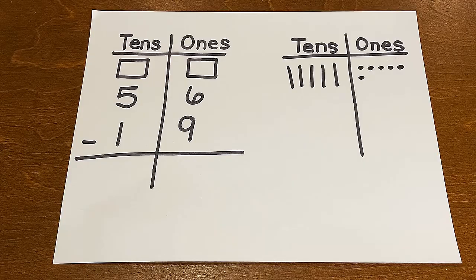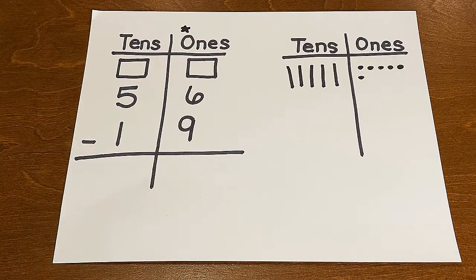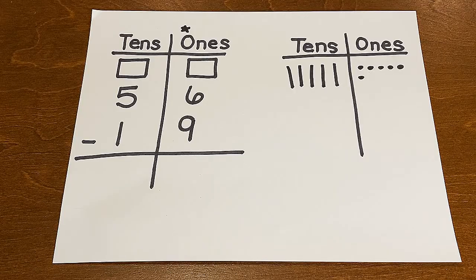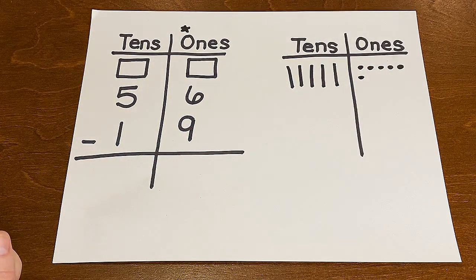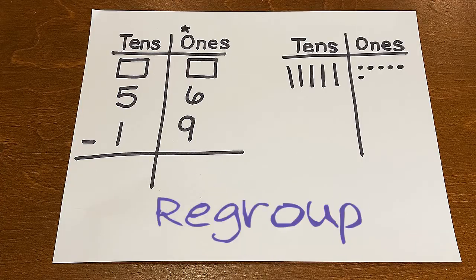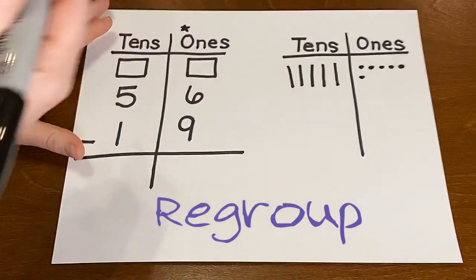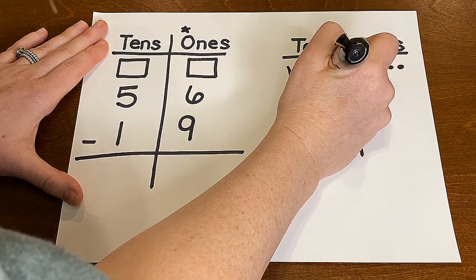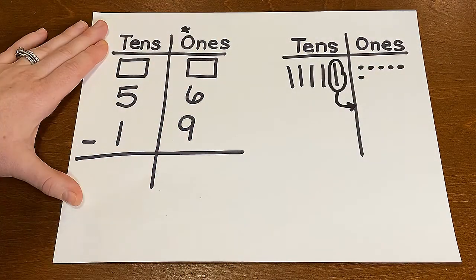I always start in the ones place and I like to put a star or even highlight the ones place to show that's where I'm going to start my problem. So now I need to ask myself are there enough ones to subtract nine? Well I have six. Can I take nine away? No I can't. So that means I need to do that magical word called regroup. Regroup doesn't mean I'm getting something away. It means I'm simply putting it into another column or another group. So I'm going to take this one ten and borrow it and I'm gonna regroup it.